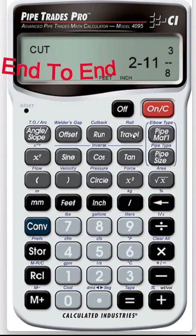That is your cut. That's your end-to-end minus your gap. Okay, 2 foot 11 and 3 eighths is your end-to-end.